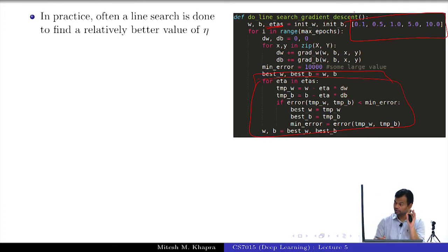Now try these different learning rates and update w and b. If you have 5 learning rates, you will get 5 different updated values for w comma b. Now plug in all these w comma b values into your loss function and see whichever is the minimum.